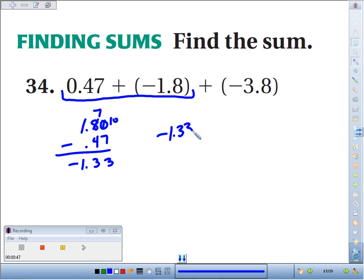Now we have to take that, and we have to add negative 3.8. So here we're adding two numbers with the same symbol. When that's the case, we add the absolute values, 1.33 plus 3.8.